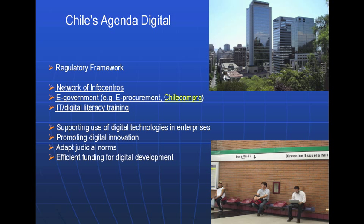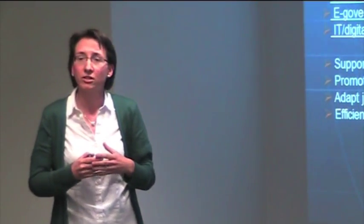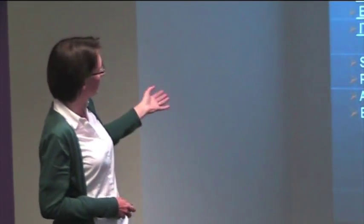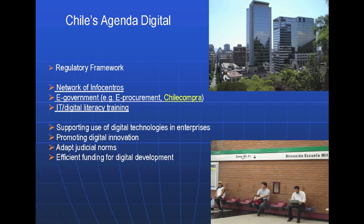The Chilean Agenda Digital was a pioneering set of policies introducing ICT at the national level across sectors. I focus particularly on three work strands: a network of info centers — telecenters with free internet access; e-government initiatives, specifically e-procurement, which is the online buying of goods and services in the name of taxpayers; and digital literacy training through a digital literacy campaign.